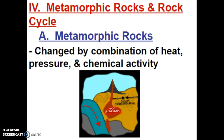The last branch of the rock family are the metamorphic rocks. The word 'morph' in Latin denotes a change in form. So metamorphic rocks are those rocks that are changed by a combination of heat, pressure, and chemical activity. New minerals will form due to intensive heat, pressure, or chemical activity — it can be one, two, or a combination of all three.